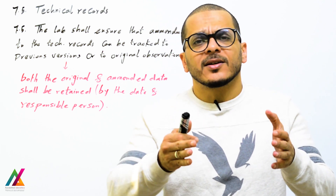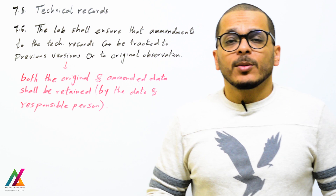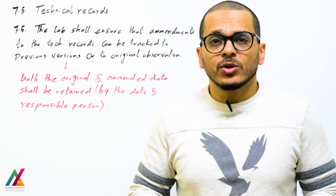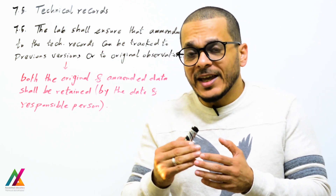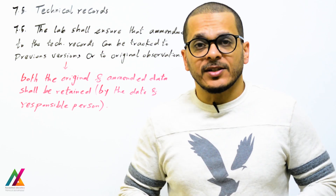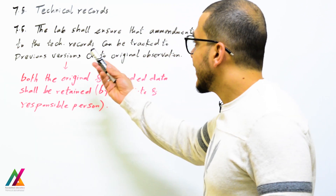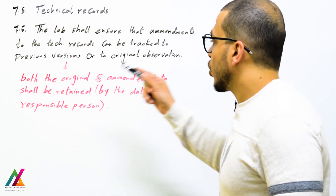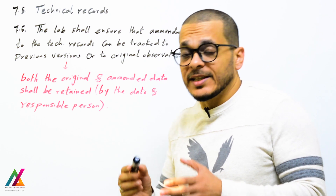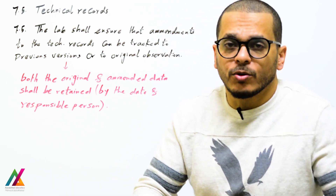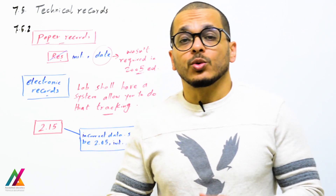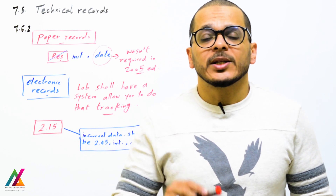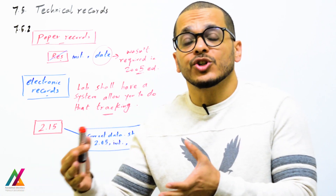You shall have complete and sufficient technical records to provide evidence to the customer that you met the requirements of this document, other international guidelines, and the customer requirements. If you make any amendment to your technical records, it shall be done in such a way that you can track back to the original observation or original results. The original and amended data shall be retained, including the date of alteration and the person responsible for the alteration.